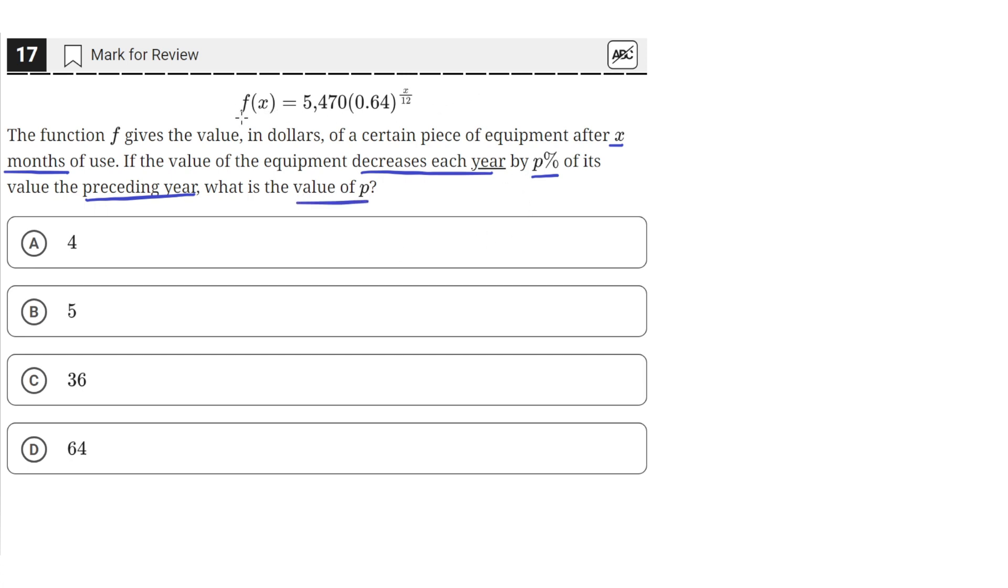So we have this function that gives us the value in dollars of a piece of equipment, and we need to find out how much the value decreases every year, or after every 12 months. And we can do that by just plugging in two years and seeing what the decrease in value is.